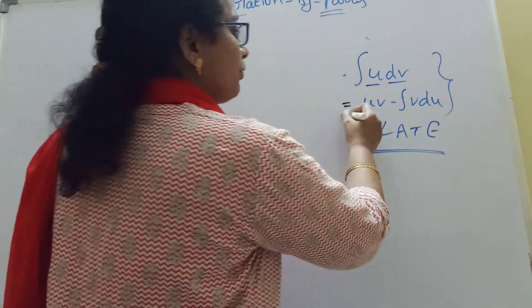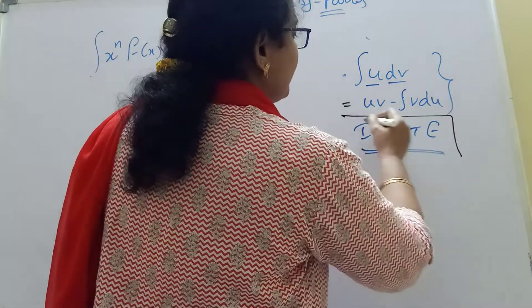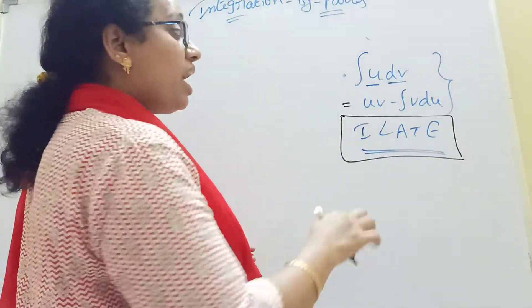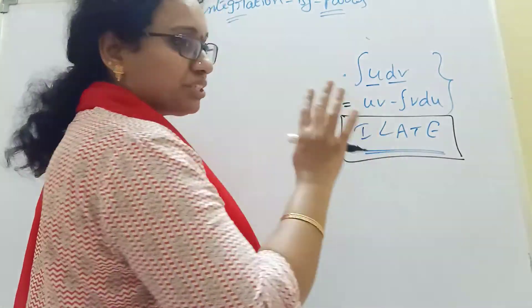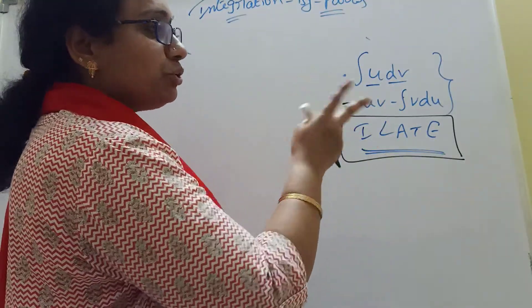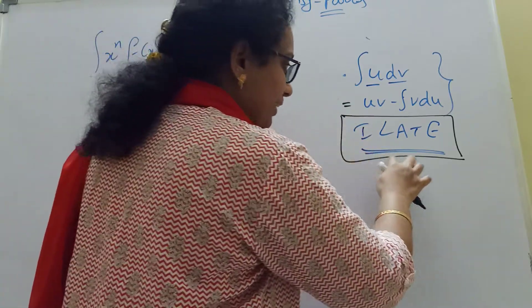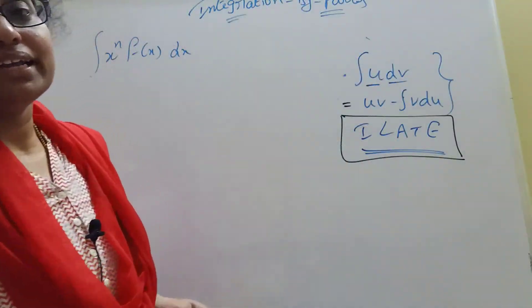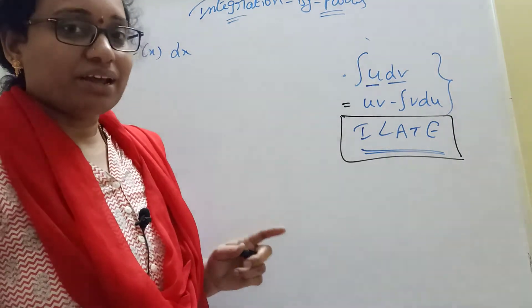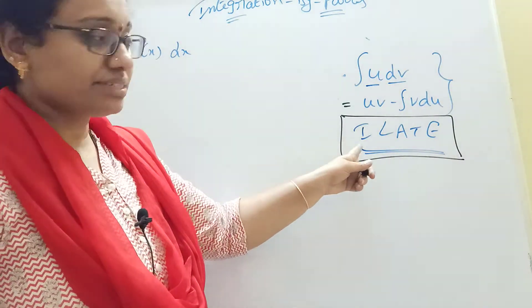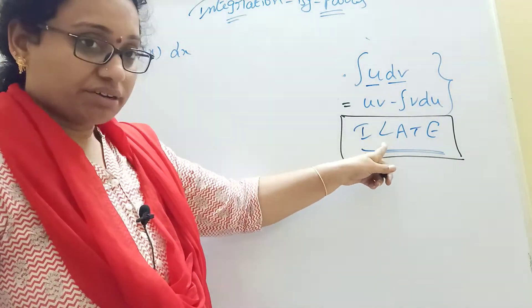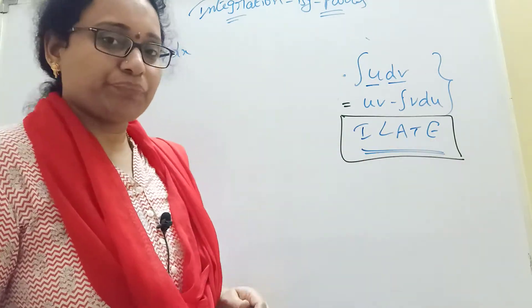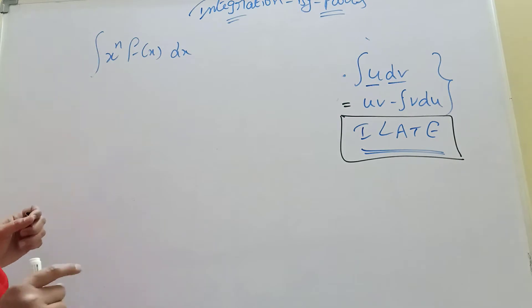The ILATE rule: I stands for Inverse trigonometric, L for Logarithmic, A for Algebraic, T for Trigonometric, and E for Exponential functions. This is a shortcut for choosing u and dv in integration by parts.